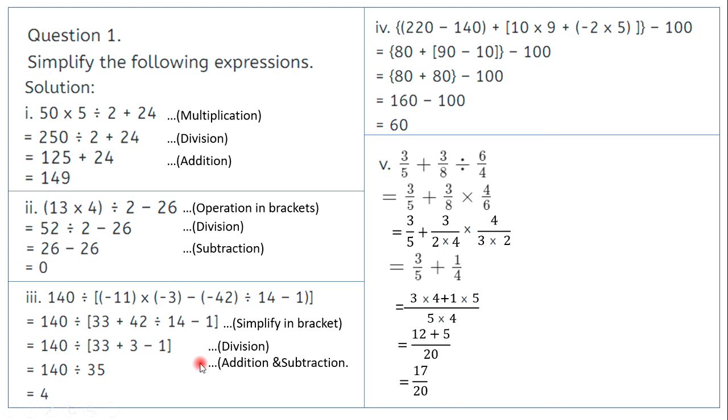Similarly in the next sum, it says simplify the brackets first. I am going to solve the things given in the bracket. Minus 11 into minus 3 gives me plus 33. Minus of minus 42 is plus 42. Then continue with solving the bracket first. There is a division which I have to solve, and 42 divided by 14 gives me 3. So I am left with 33 plus 3 minus 1. 33 plus 3 is 36, 36 minus 1 is 35. So 140 on dividing by 35, I get the answer 4.